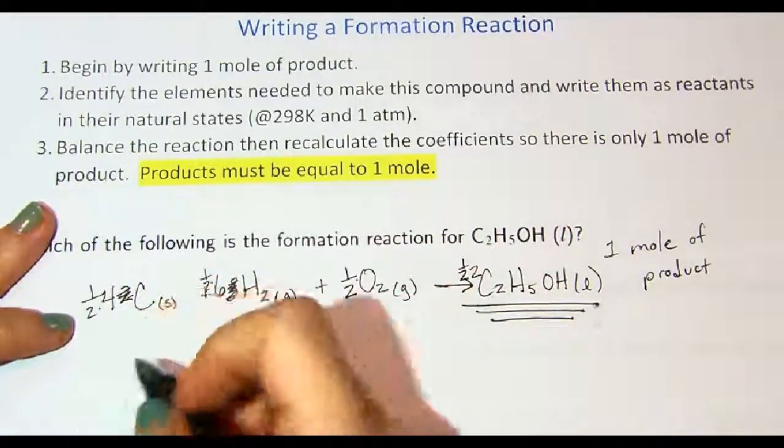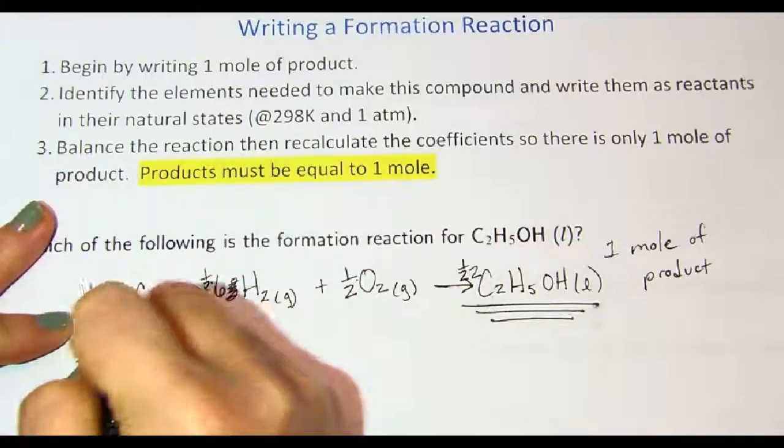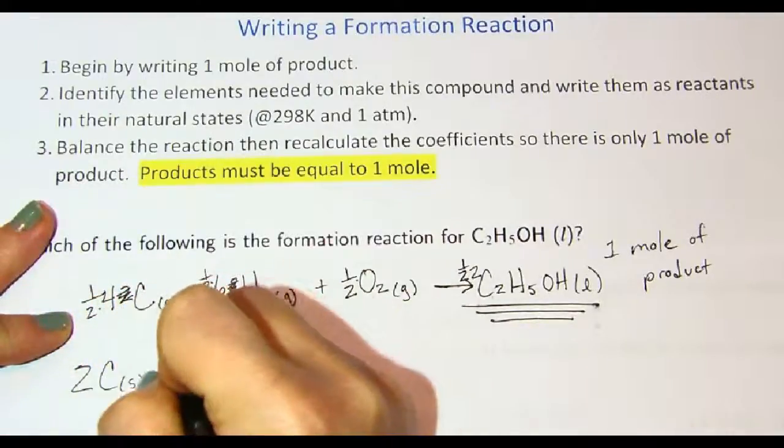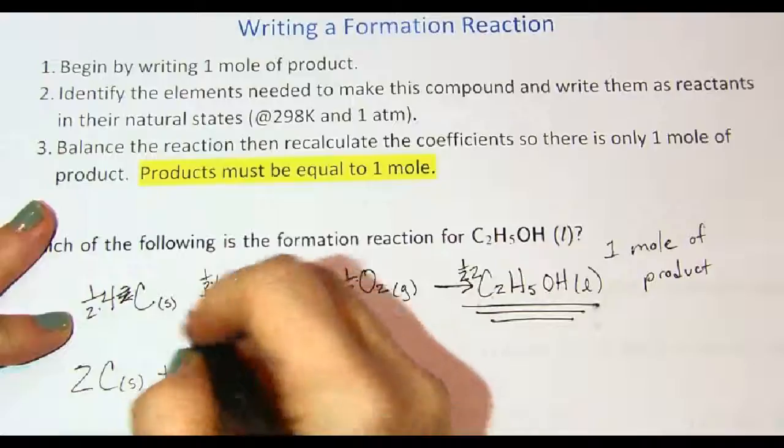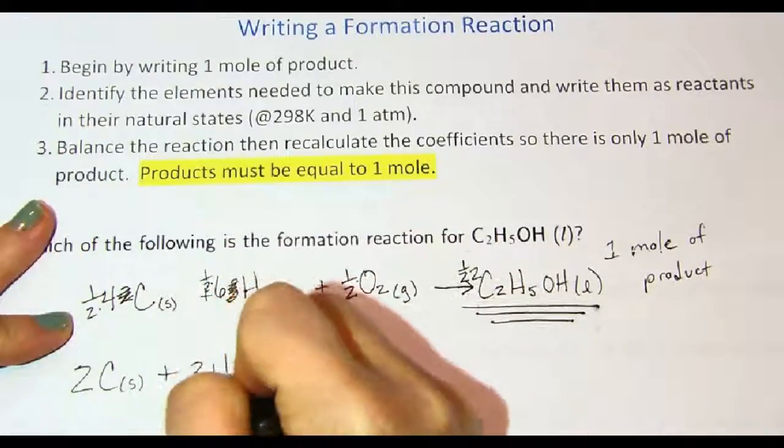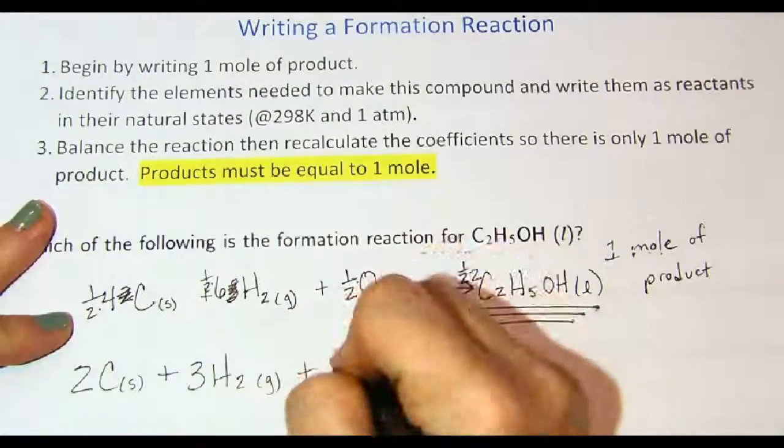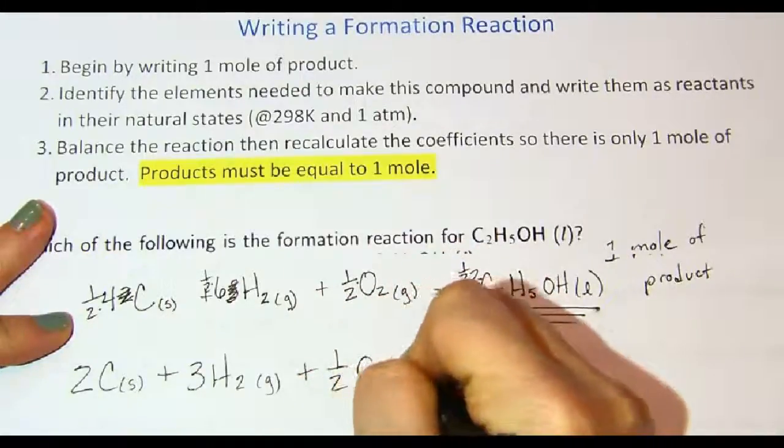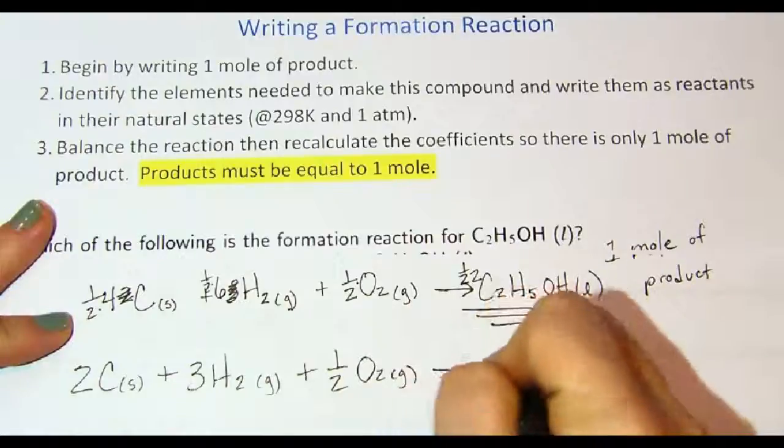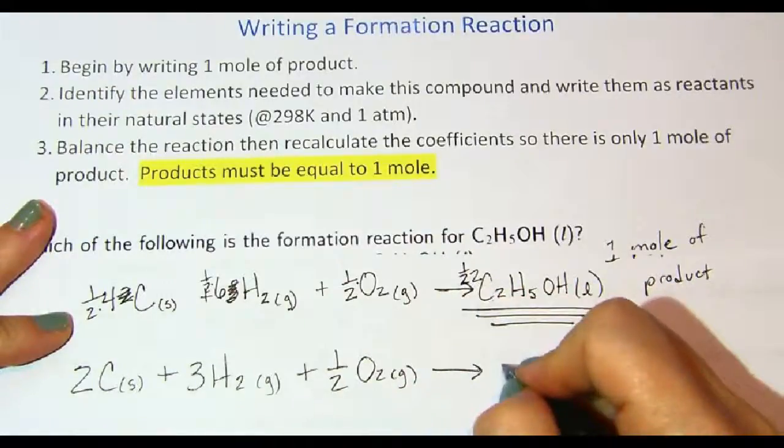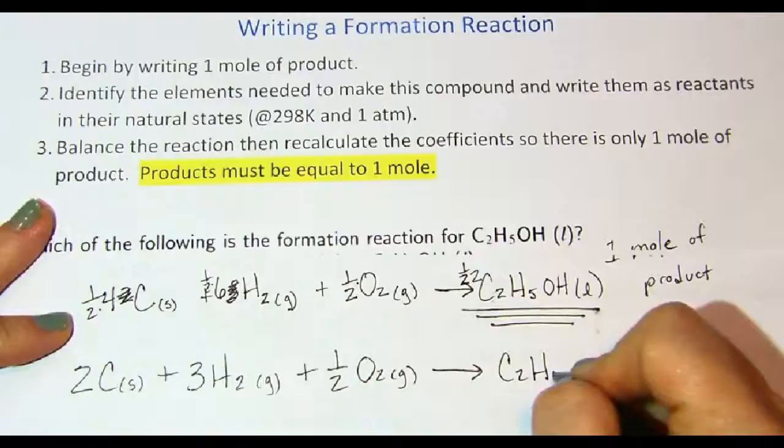Four divided by two gives two carbons in the solid phase, plus half of six is three hydrogens in the gas phase, plus one half O₂ in the gas phase yields one ethanol as the product.